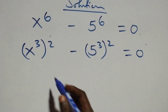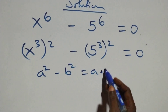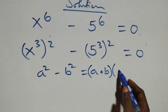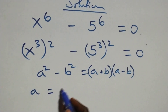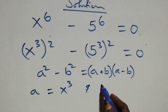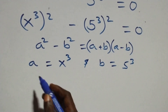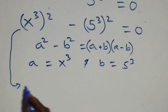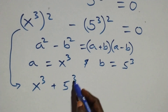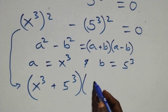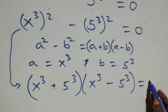This follows from a squared minus b squared, which is the same thing as a plus b into brackets, then open bracket a minus b. Here, a stands as x raised to power 3 and b stands as 5 raised to power 3. So we have x raised to power 3 plus 5 raised to power 3, into brackets, then open bracket x raised to power 3 minus 5 raised to power 3, close bracket, equals to 0.